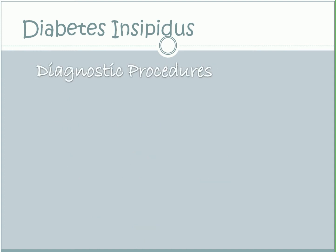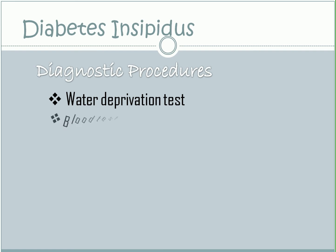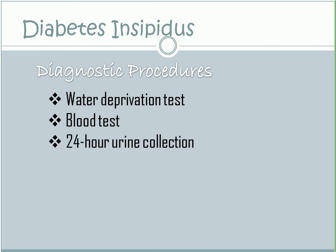Diagnostic procedures. Water deprivation test: the patient will be prevented from drinking fluids for several hours. While fluids are being withheld, the doctor will measure changes in urine output, body weight, and urine concentration. Blood tests are done to measure serum electrolytes. 24-hour urine collection is used to determine the volume of urine over 24 hours. Urine specific gravity results are very low in patients with diabetes insipidus.